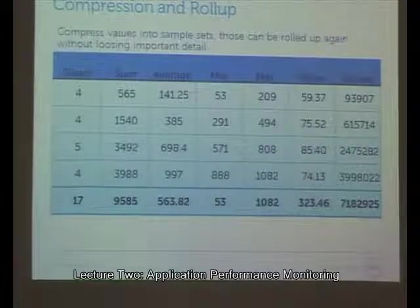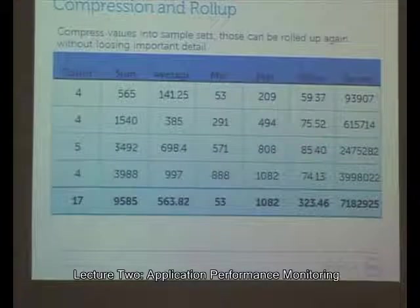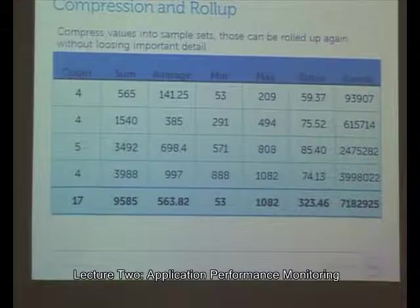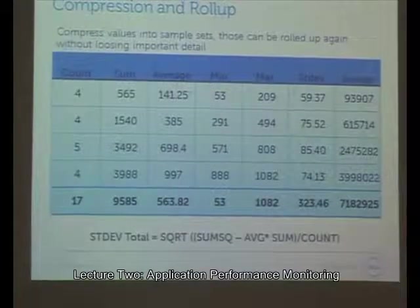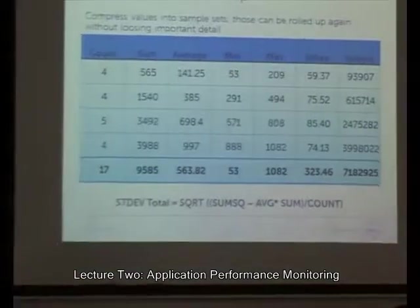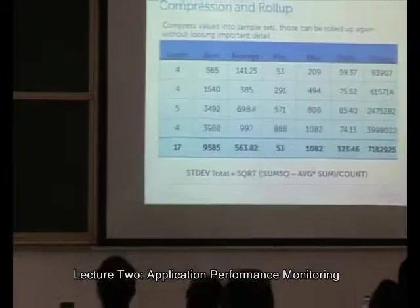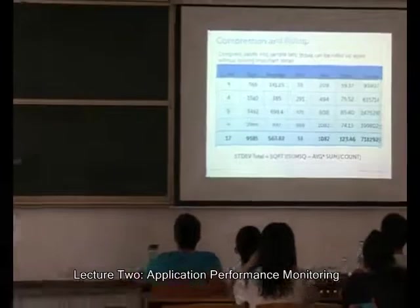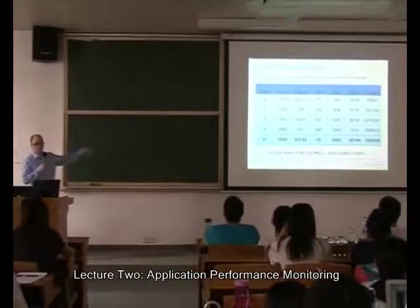Otherwise I'd have to store 17 individual values, and if that got to a million values, that's the purpose of compression. If you want to have a standard deviation from a set of data, you can roll it up using that formula.